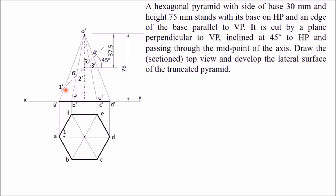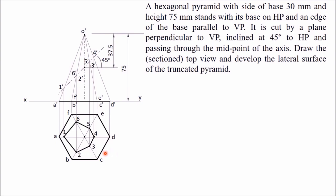Similarly, all other slant edges are cut at different points; name these as 1', 2', 3', 4', 5', 6'. Now project these points onto the top view. Point 1' lies on slant edge O'A', so project it onto OA to get point 1. Points 2' and 6' lie on O'B' and O'F', so project them onto OB and OF. Points 3' and 5' project similarly, and 4' projects onto OD to give point 4.